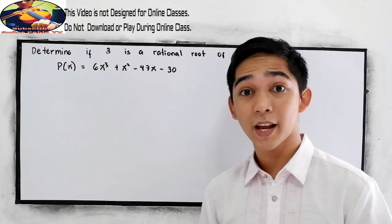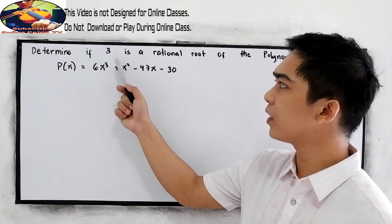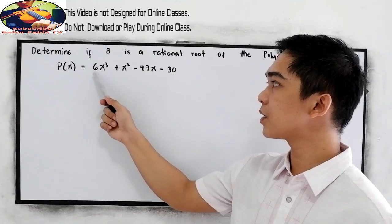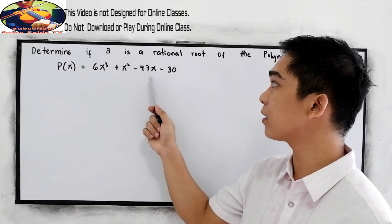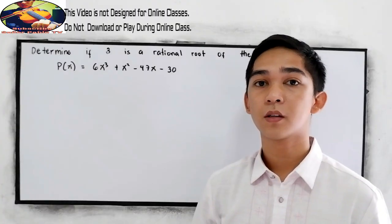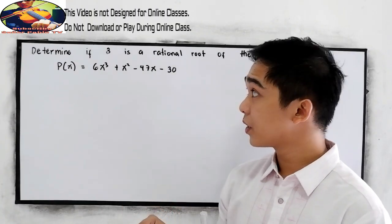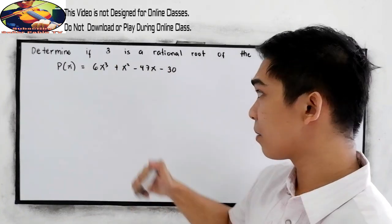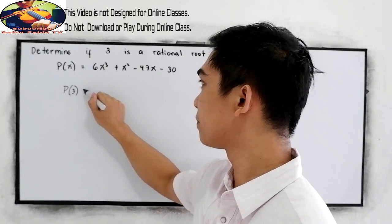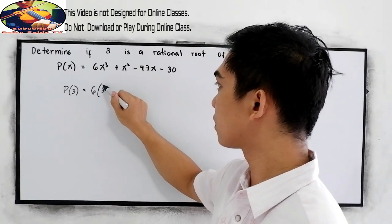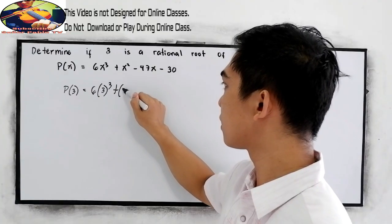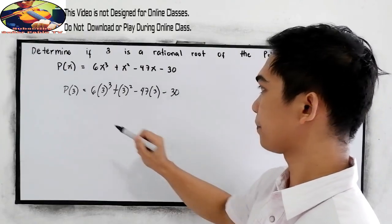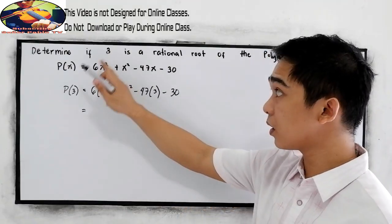Now let's have our second example. Determine if 3 is a rational root of the polynomial P(x) = 6x³ + x² − 47x − 30. We're just going to test whether 3 is a rational root of the given polynomial. So let's substitute P(3).